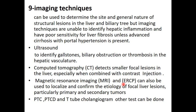Continuing our lecture about the liver and biliary system and the investigation of patients with liver disease. Imaging techniques are very useful and important in diagnosing patients with liver disease. Mainly ultrasound is very useful — you can determine the site and general nature of any structural lesion in the liver. It is very helpful and you can identify, for example, a gallstone when there is obstructive jaundice, masses or tumors, or even thrombosis in the hepatic vasculature.